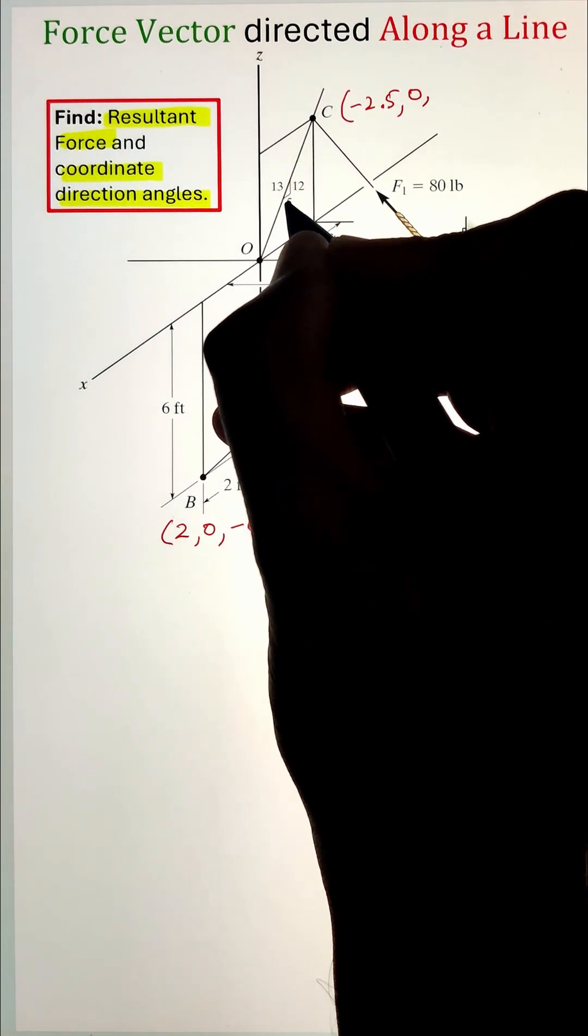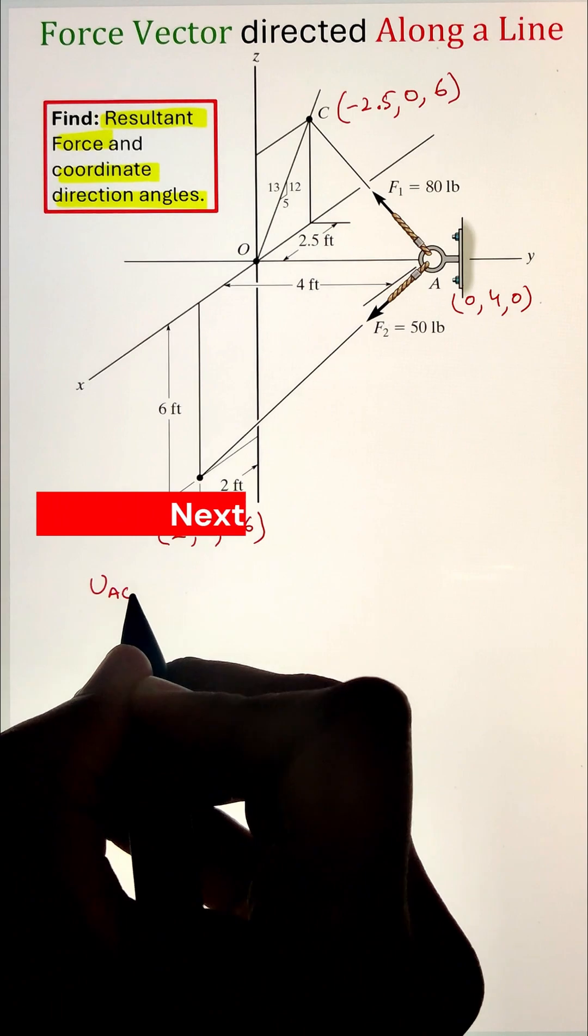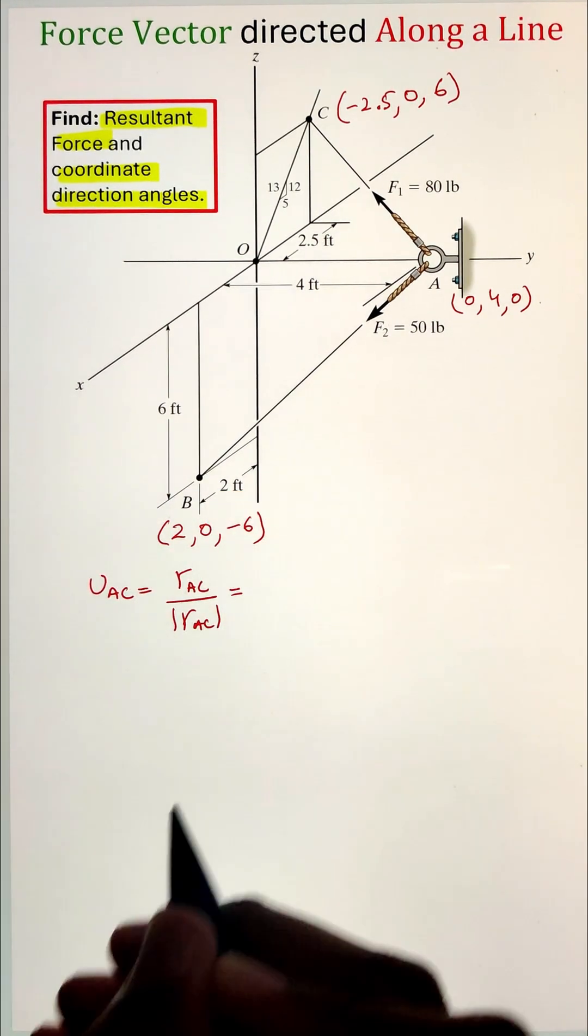Point B lies at a distance of 2 feet in the x-direction and negative 6 in the z-direction. Point C also lies on our x-z plane at a distance of 2.5 feet.